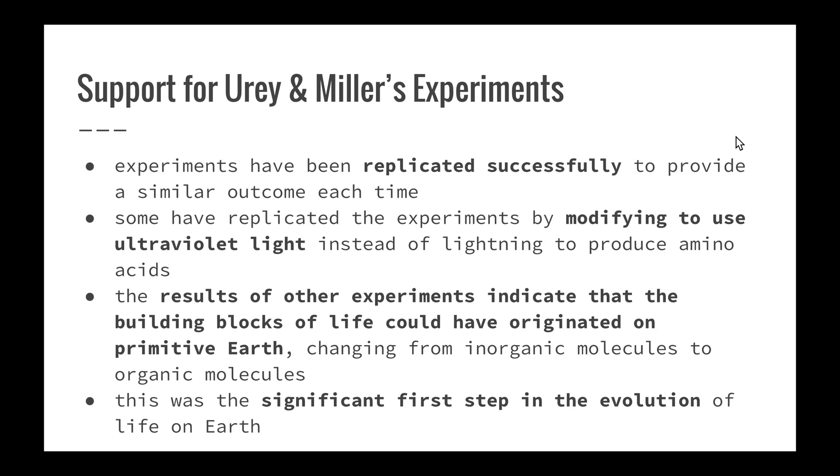So what is the support for Urey and Miller's experiments? People have conducted similar experiments to Urey and Miller's and they've been able to provide a similar outcome each time. Some other scientists have also replicated the experiments by modifying it to use ultraviolet light instead of lightning in order to produce the amino acids, because as we know, there was a huge amount of ultraviolet radiation. By changing that input of energy, we still had the same outcome.